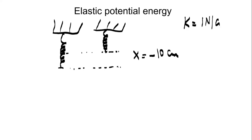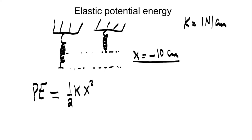If we compress the spring we get negative 10 centimeters. The elastic potential energy is still one half K times X squared. Even though X is negative because it is compressed, the energy is the same because we have X squared — whether we stretch or compress by the same amount, we get the same elastic potential energy.